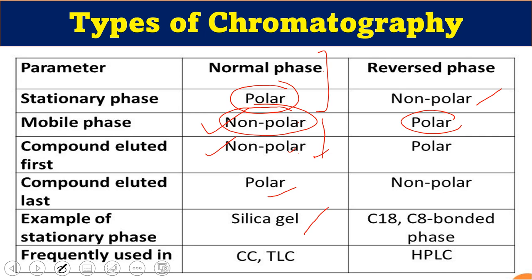In reverse phase chromatography, the stationary phase is non-polar (hydrophobic) and the mobile phase is polar (hydrophilic). Polar compounds elute first along with the polar mobile phase, and non-polar compounds elute last. Common stationary phases are C18 and C8 bonded phases, and this type is commonly used in HPLC. These are the two major categories based on the type of stationary and mobile phase used. Common stationary phases for normal phase include silica, siloxane, amino-bonded siloxane, cyanopropyl-bonded siloxane, and diol-bonded siloxane with organic solvent mobile phases.